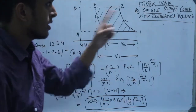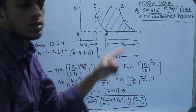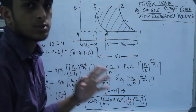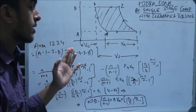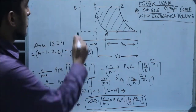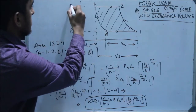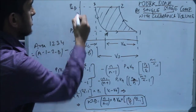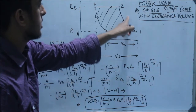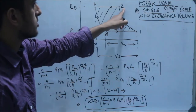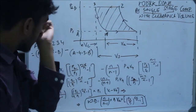Friends, I will be deriving the expression for work done by a single-stage reciprocating compressor with clearance volume. First, let us look at the graph here. This is the inlet pressure — that is the suction pressure — and this is the delivery pressure P2. This is the suction process, this is the compression process, this is the discharge process, and this is the expansion process.